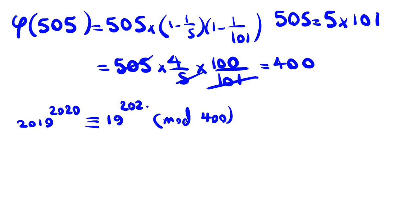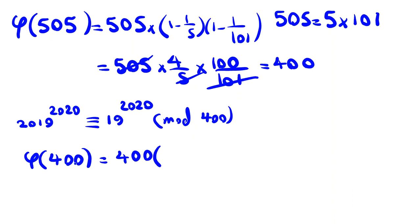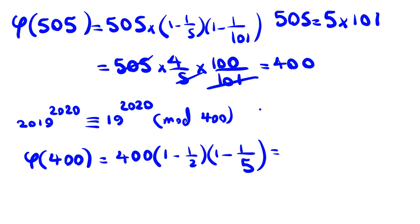2019 mod 400 is 19, so we need 19^2020 mod 400. To find this we compute φ(400): since 400 = 2^4 × 5^2, we get φ(400) = 400 × (1 - 1/2) × (1 - 1/5) = 160. Now we use a different approach and write 19 as 20 minus 1.